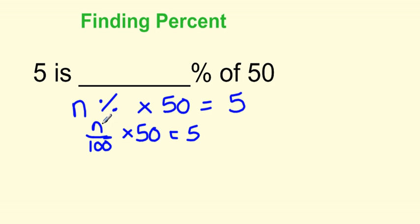Since we have a fraction here, n over 100 times 50, we can just multiply 50 by n and put it over 100 equals 5.